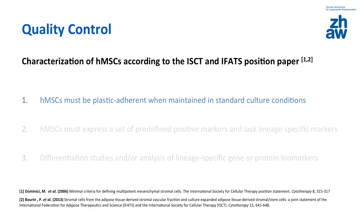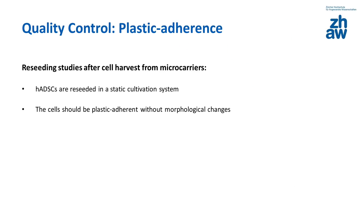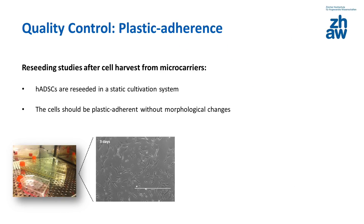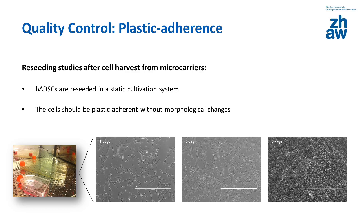Due to the fact that human adipose tissue-derived stem cells are characterised as adherent growing cells, the cells should adhere to a plastic surface after being harvested from the microcarriers. For this purpose, the HMSCs can be reseeded in a standard T-flask. Cell adherence and cell growth need to be reported over three and a half and seven days or longer. The cells should have a fibroblast-like morphology, as changes in morphology indicate a possible differentiation.